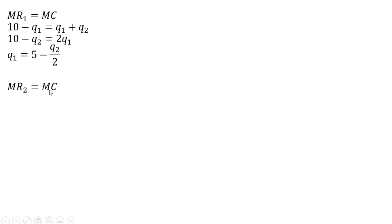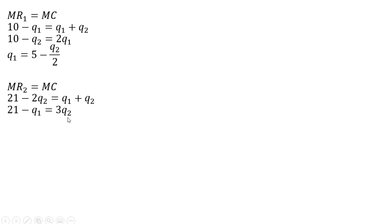We'll do a similar thing in market two, setting the marginal revenue in market two equal to marginal cost. Here's our marginal revenue that we found earlier. Now we're going to solve this for Q subscript two. Adding two Q subscript two to both sides, we get three Q subscript two. Then moving Q subscript one over to the other side and dividing through by three — 21 divided by three is seven — and we end up with this equation.